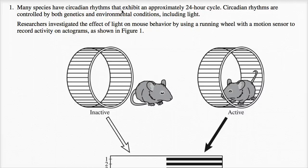Many species have circadian rhythms that exhibit an approximately 24-hour cycle. Circadian rhythms are controlled by both genetics and environmental conditions, including light.